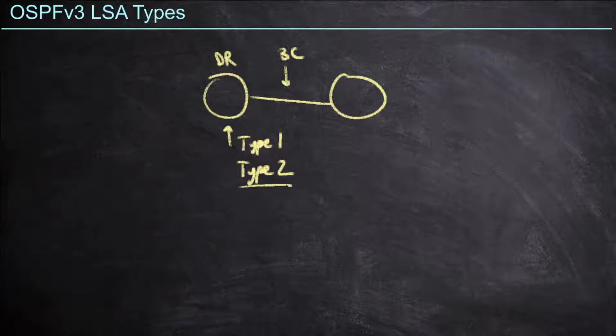then every DR on that broadcast link is also going to send a type 2 LSA. Now, in OSPF v2, these types are going to include a lot of information, including the prefixes, the subnets that are on the links that we're sending information about. But in OSPF v3, we do not send prefixes. We are going to send prefixes as a separate LSA type that we're going to talk about here in a few minutes.